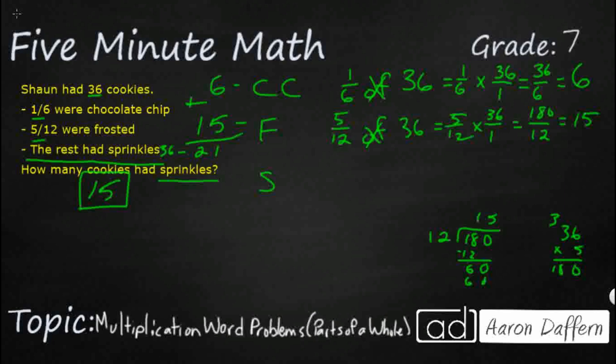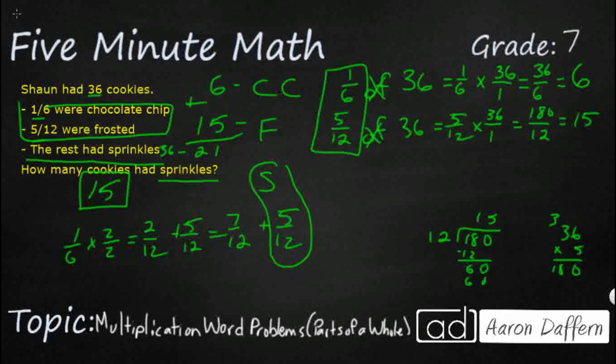Now that's one way to solve it. Another way to solve it would be to look at these two and add them up, the 1/6 and 5/12. I can add them if I change my 1/6 into 12ths. So that's going to be 2/12. So if I say 2/12 plus the 5/12, that means I've got 7/12 of my cookies already taken with my chocolate chip and frosted. That means that what has to be left is going to be 5/12. So this is going to be my sprinkles, 5/12. And then all I need to do is what we have already done. We need to take 5/12 of 36. And guess what you would get? You would get 15.